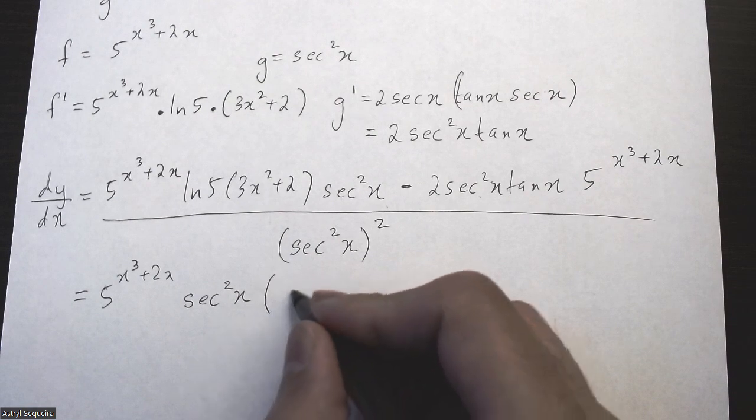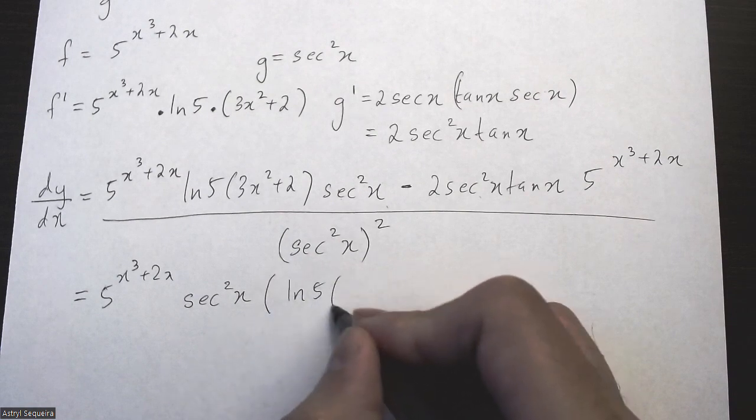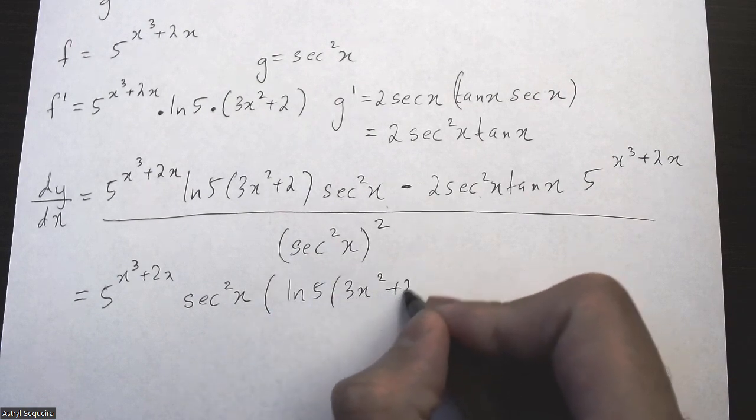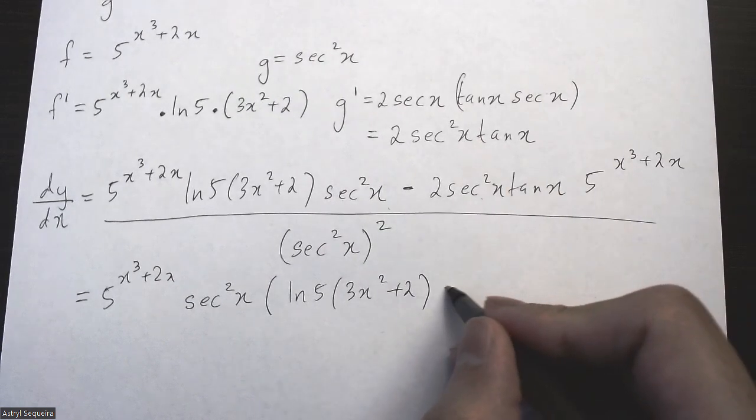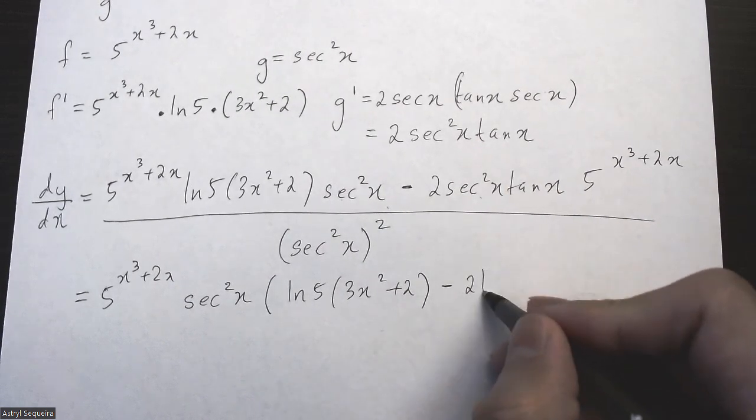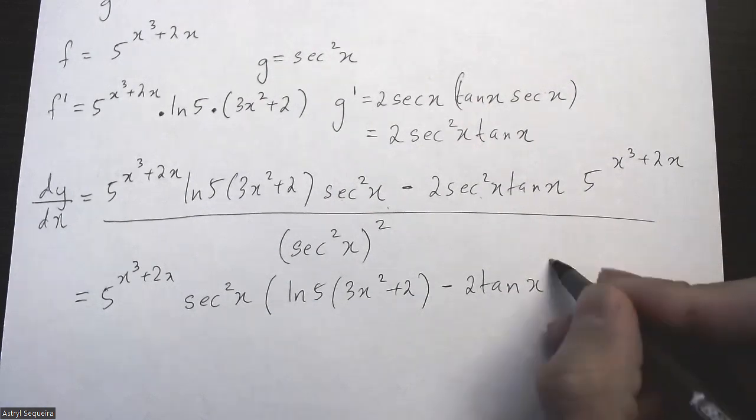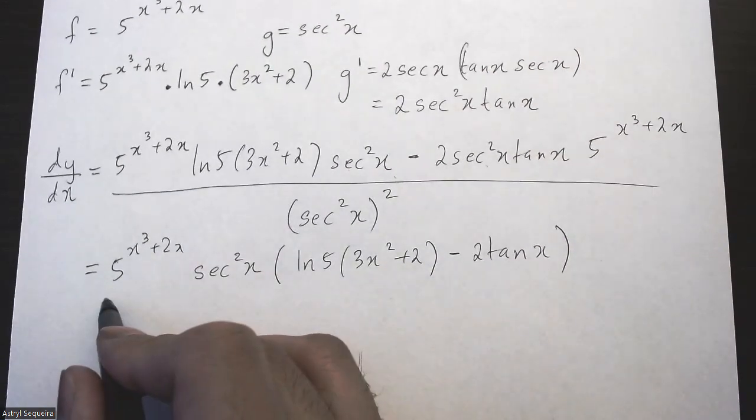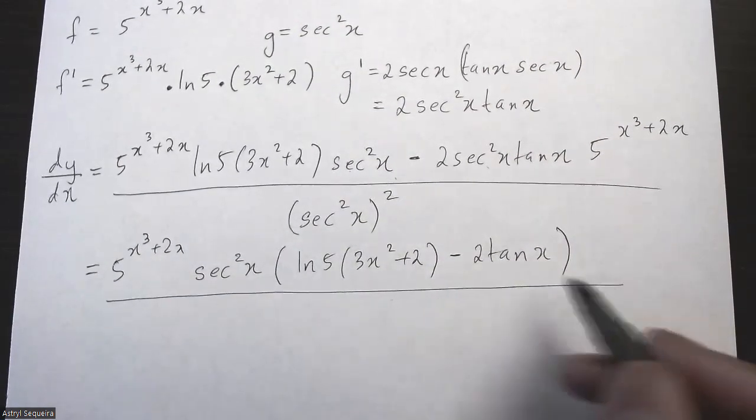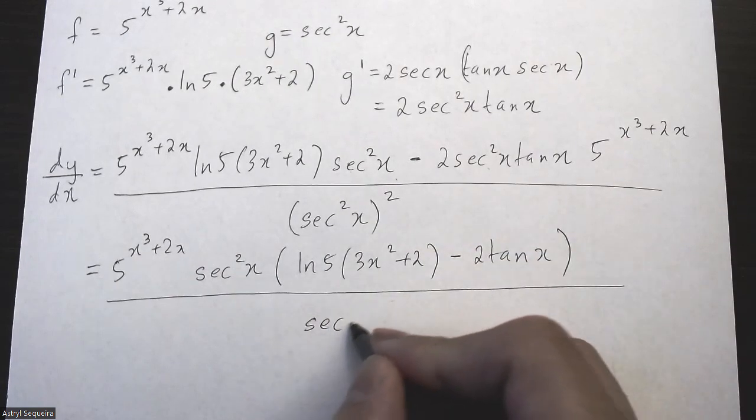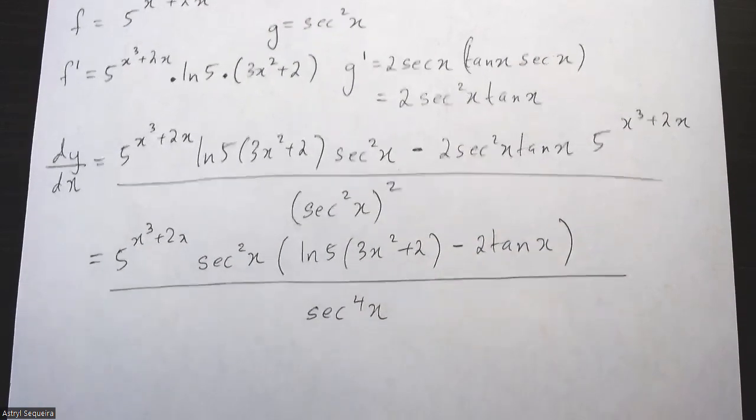If I common factor these two out, I'm left with ln 5 times (3x squared plus 2) minus 2 tan x. And in the denominator, I can multiply the square into the bracket, so this becomes sec to the 4th x.